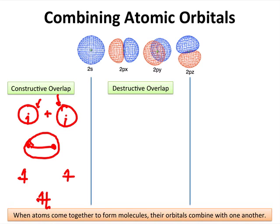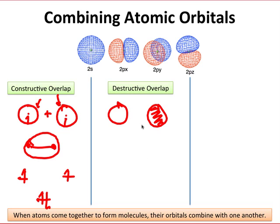On the other hand, we can imagine destructive overlap where, if we bring in two orbitals of opposite phase, we're going to combine in the region between the nuclei. Now when they combine in the region between the nuclei, there will be a place where the addition is zero. At that point, we'll have a node.